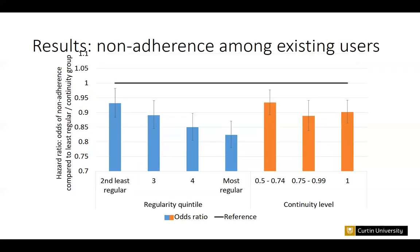Looking at the Cox regression assessing statin non-adherence among existing users, the outcome is framed negatively, so we are looking at hazard ratios for non-adherence. Higher regularity was associated with a reduced likelihood of statin non-adherence, with a hazard ratio of about 0.84, and something similar was seen for continuity. There were some violations of the proportional hazards assumption, which was dealt with by using the problematic variables as stratifying variables rather than covariates.